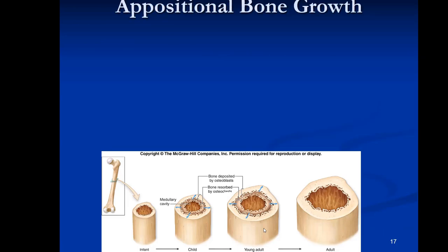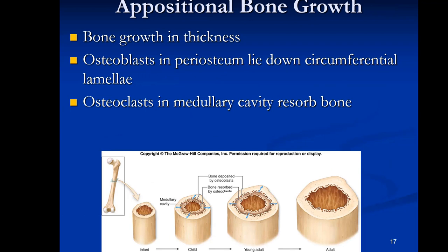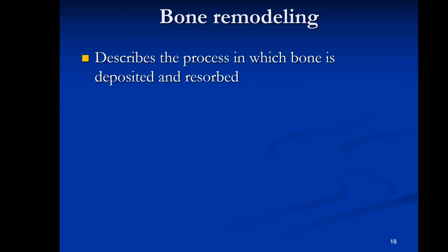Bone can also grow in width through appositional bone growth. As you go from infant to adult, bone gets thicker, but the medullary cavity also increases in size. This prevents bones from becoming too heavy. Osteoblasts continuously add bone on the outside while osteoclasts enlarge the cavity from the inside — a balanced process that keeps bones functional for movement.